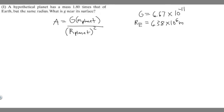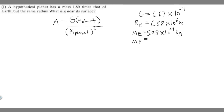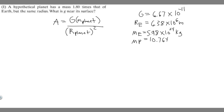Now we need to determine the mass of the planet. We know it's going to be 1.8 times that of Earth, so we need to take the mass of the Earth. You need to know the mass of the Earth — another number you have to memorize — which is 5.98 times 10 to the 24 kilograms. Our hypothetical planet is going to be 1.8 times this, so M_P is going to be 1.8 times 5.98 times 10 to the 24. Multiplying 1.8 times 5.98 gives us 10.764 times 10 to the 24 kilograms.